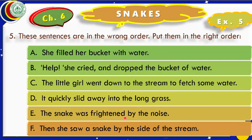The sentences are: 'She filled her bucket with water.' 'Help! she cried and dropped the bucket of water.' 'The little girl went down to the stream to fetch some water.' 'It quickly slid away into the long grass.' 'The snake was frightened by the noise.' 'Then she saw a snake by the side of the stream.' Try to find out what happened first. The little girl went down to the stream — that will be our first sentence.